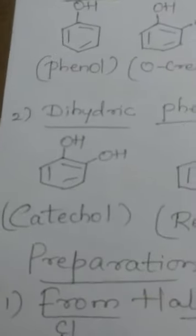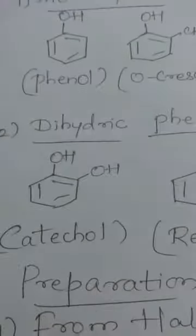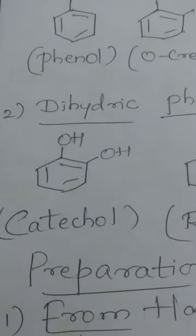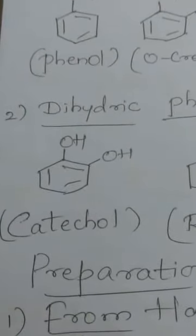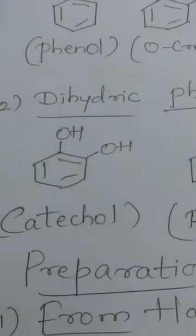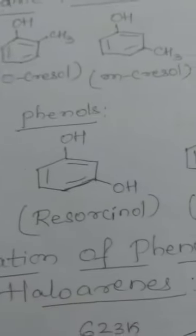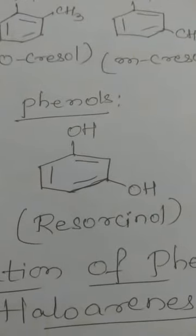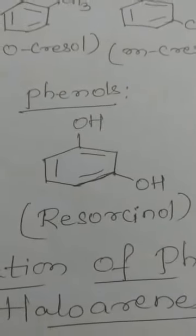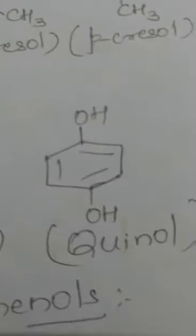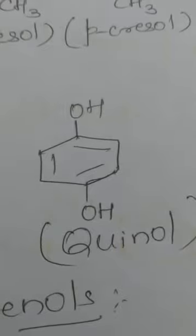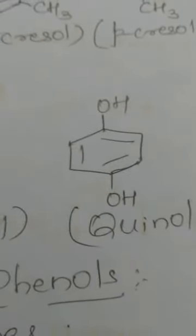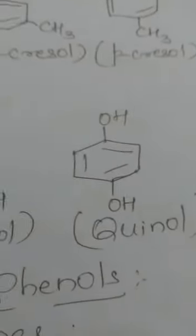Dihydric phenols contain two hydroxy groups directly bonded to the aromatic ring. The first example is catechol, also named as benzene-1,2-diol. The other example is resorcinol, which has two hydroxy groups at the 1,3 position — also called benzene-1,3-diol. Another example is hydroquinone, which has hydroxy groups at the 1 and 4 positions, also called benzene-1,4-diol. These are the examples of monohydric and dihydric phenols.